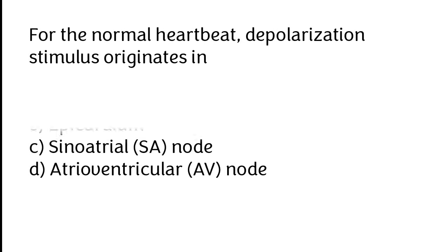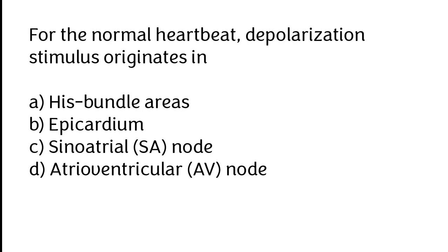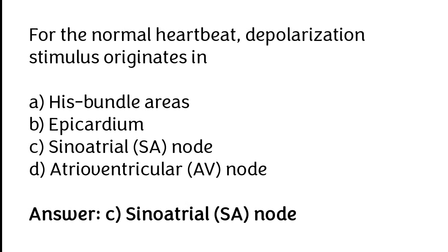For the normal heartbeat, depolarization stimulus originates in: His bundle areas, epicardium, sinoatrial (SA) node, atrioventricular (AV) node. The correct answer is option C. For the normal heartbeat, depolarization stimulus originates in the sinoatrial node.